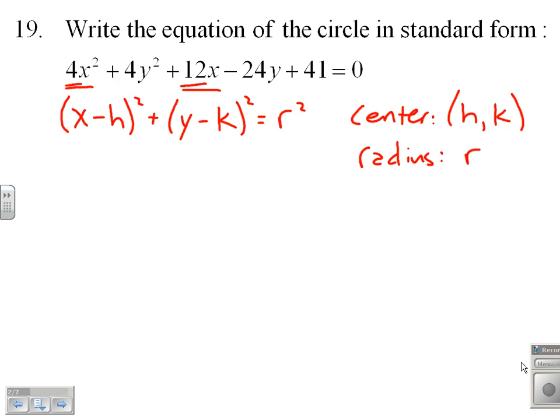So my x's grouped, factor out the 4, gives me x squared plus 3x, leave a blank. Then the y squared, I'm going to group my y's, factor a 4 out of it as well, plus 4 times y squared minus 6y, and leave a blank. And then I'm going to subtract 41 to the other side.